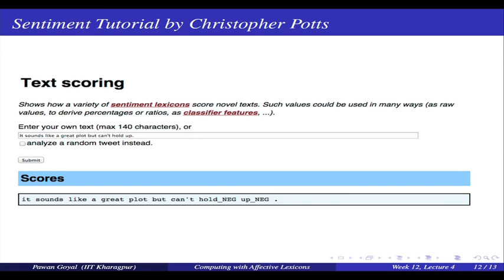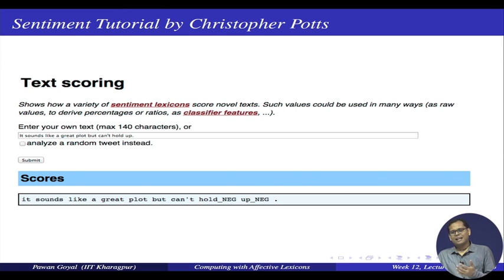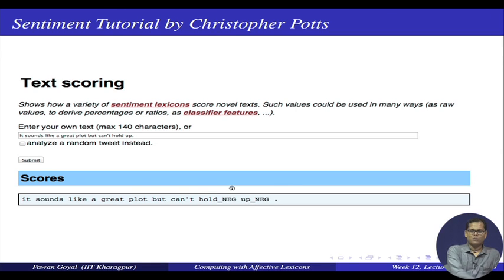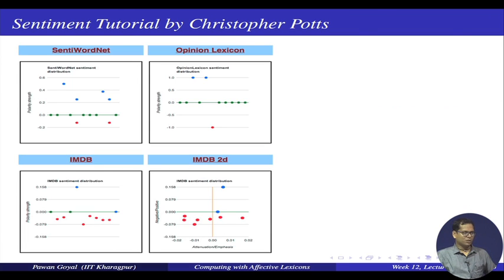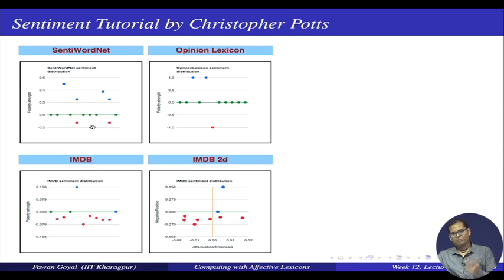Christopher Potts has a nice sentiment tutorial — search 'sentiment tutorial by Christopher Potts'. You can try different sentences and see how tokenization is done. It shows how different lexicons like SentiWordNet and opinion lexicon assign scores, letting you see whether words get positive or negative polarity. There are many other helpful resources on that website.